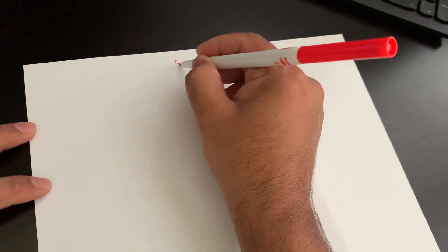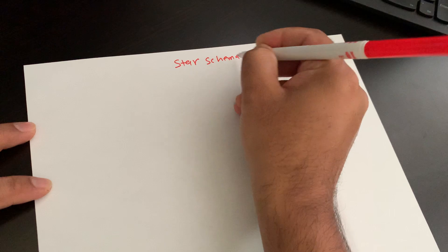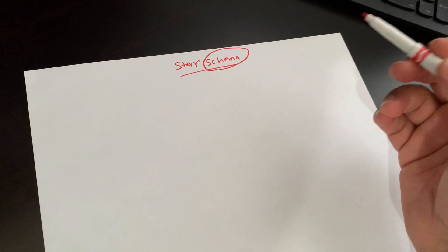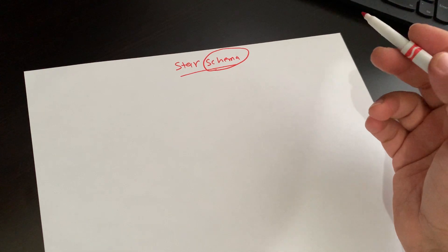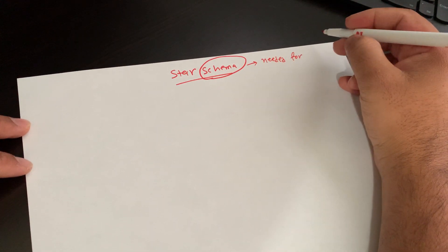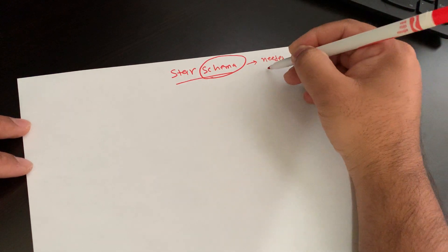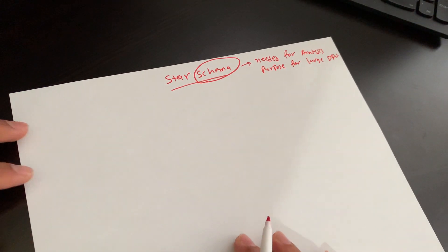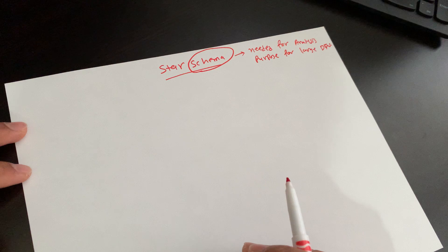Hello friends, today we're going to see two types of data warehousing schemas: one, star schema; second, snowflake schema. In data warehousing, schema is specially designed for data model warehousing because of the unique need of very large database design for analysis purpose.